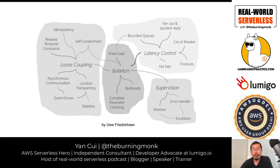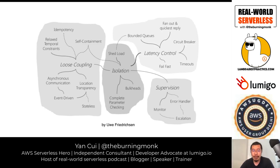If you have a distributed monolith where lots of different services share the same database, you don't have that self-containment. You have a single point of failure: if the database has a problem, all of your services go down.